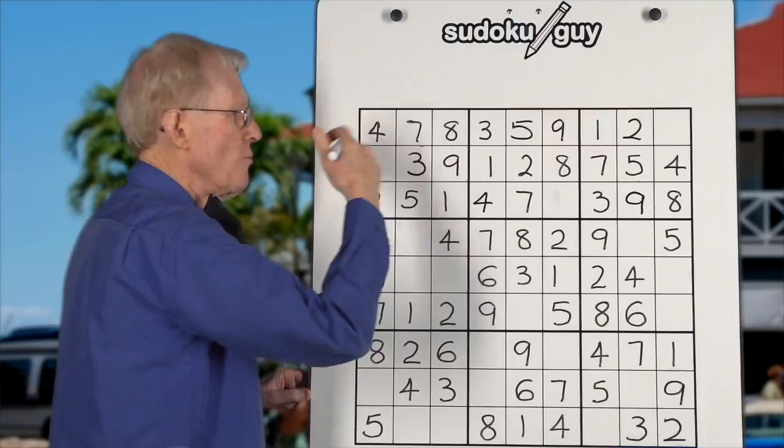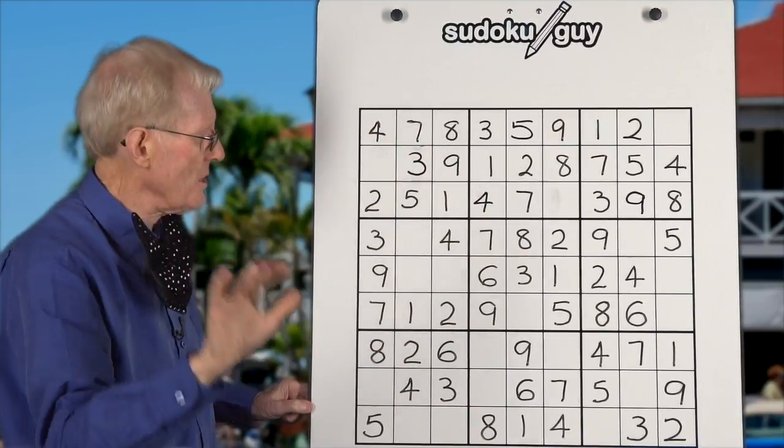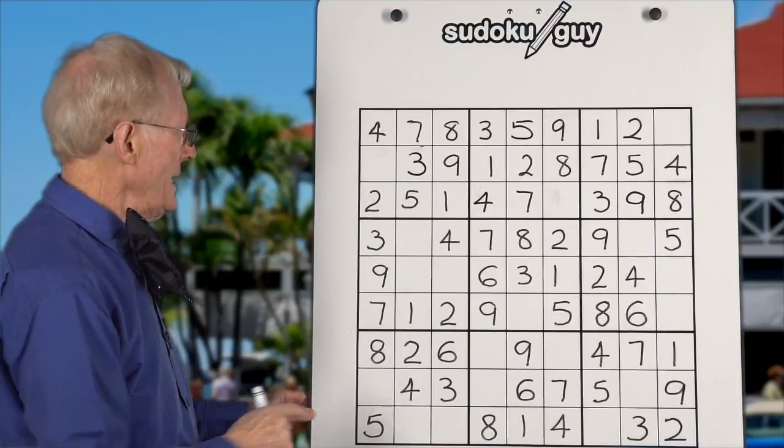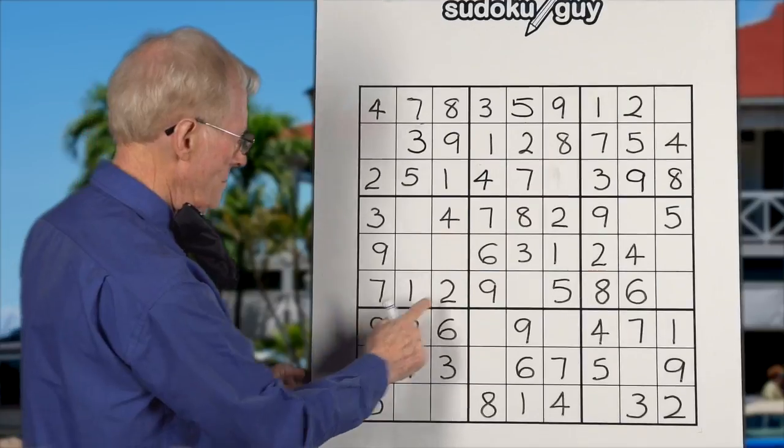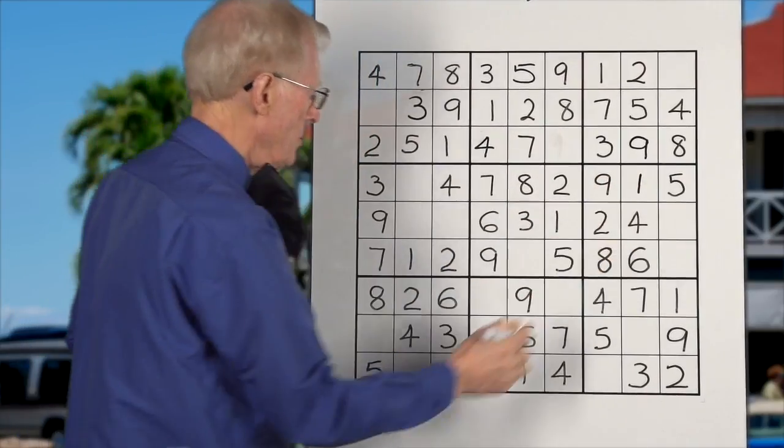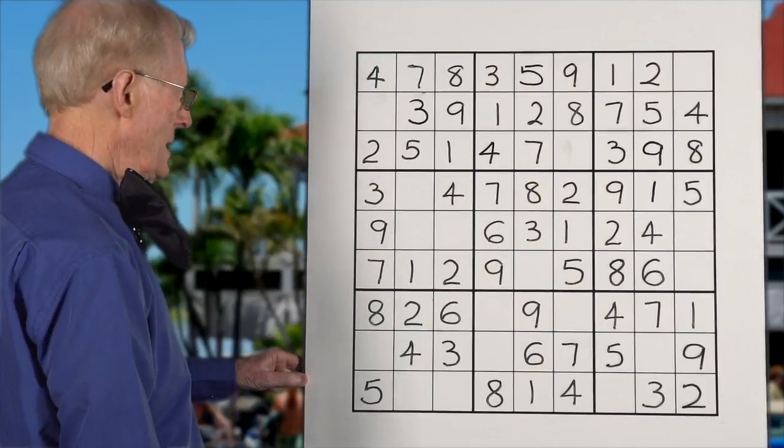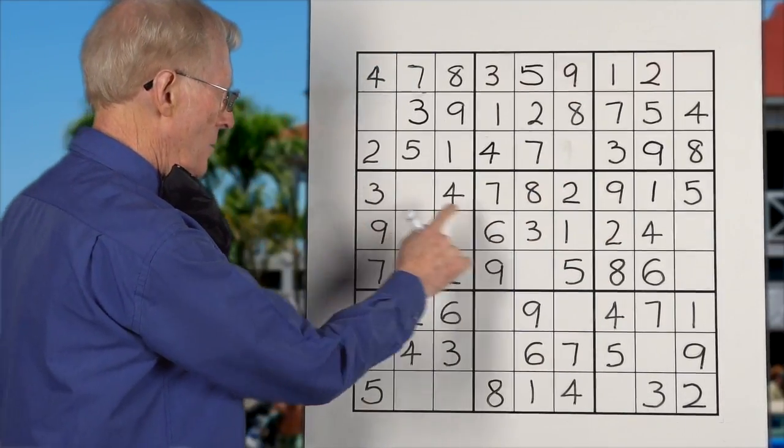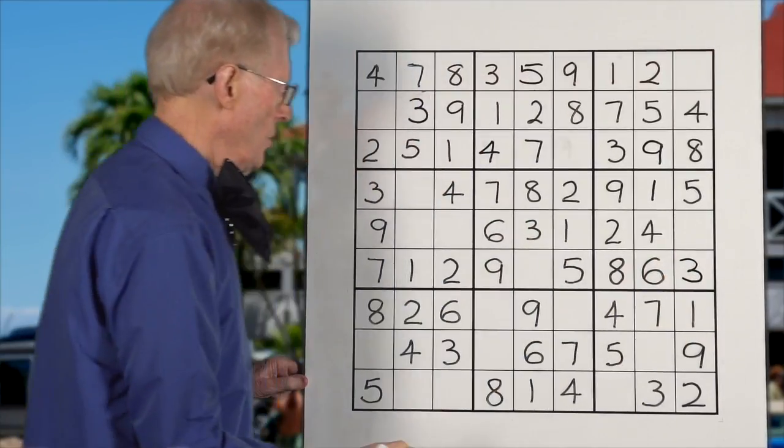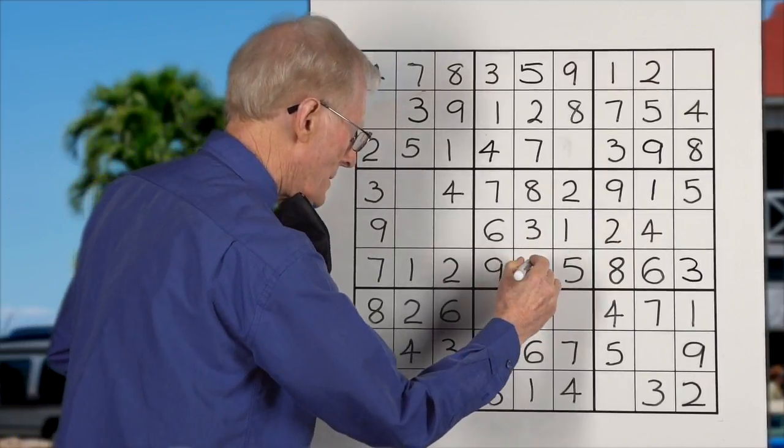Now you can see places where you could put numbers because there's only one number left, but I'm going to leave that till the end because I want to show you how to use these little numbers. Okay, now let's go these three blocks. Ones, we have a bottom, a middle. It has to be on the top. Twos, we have a bottom, a top, and a middle. They're there. Threes, we have a top, we have a middle, and we can have a bottom over here. Fours, we have a top, a middle, and a bottom. Here we go.